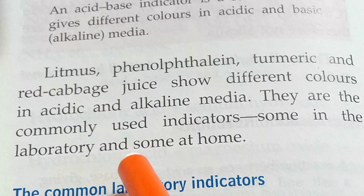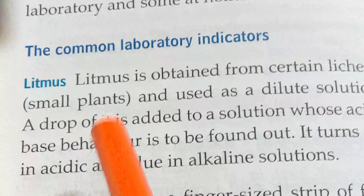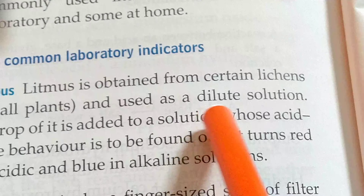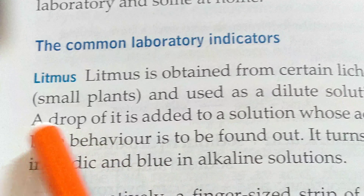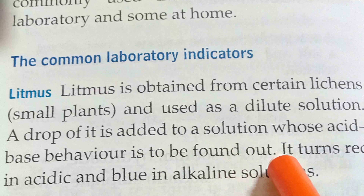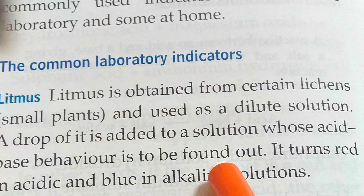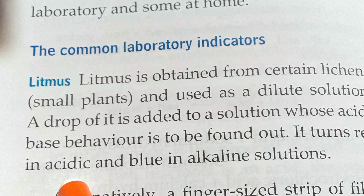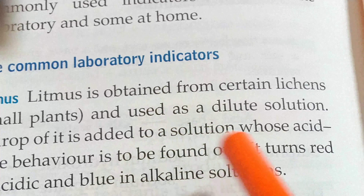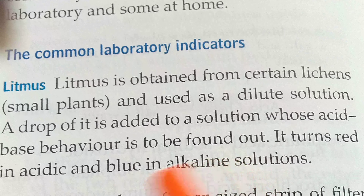Some are used in the laboratory and some at home. The common laboratory indicator is litmus paper. Litmus is obtained from certain lichens and used as a dilute solution. A drop of it is added to a solution whose acid-base behavior is to be found out. If the solution is acidic, litmus paper turns red.